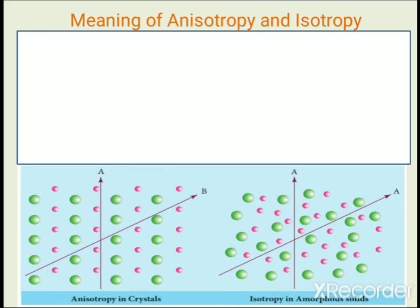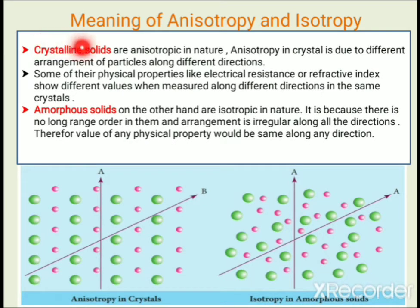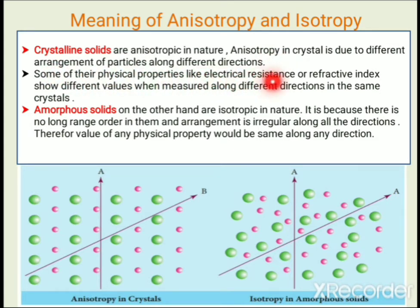Now let us understand the meaning of anisotropy and isotropy. Crystalline solids are anisotropic in nature. Anisotropy in crystals is due to different arrangement of particles along different directions. Some physical properties like electrical resistance or refractive index show different values when measured along different directions in the same crystal.